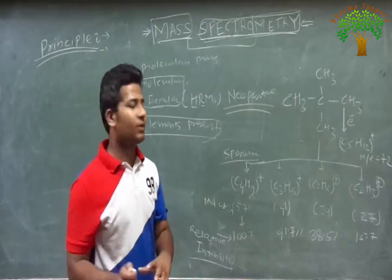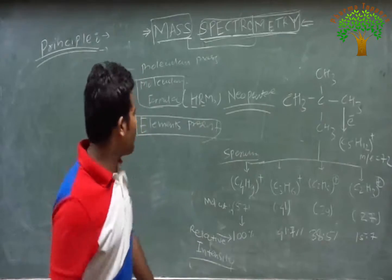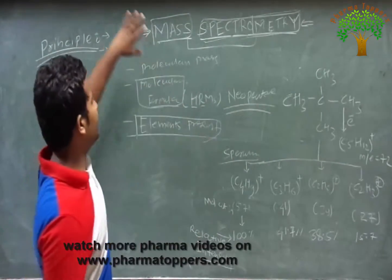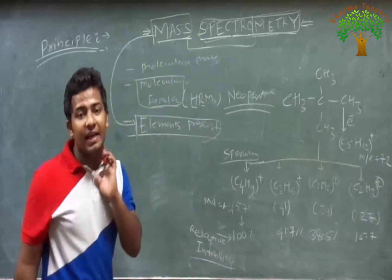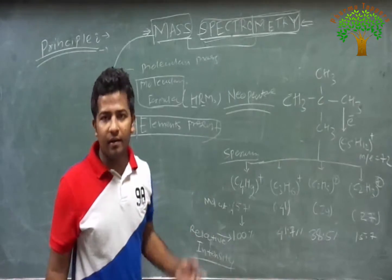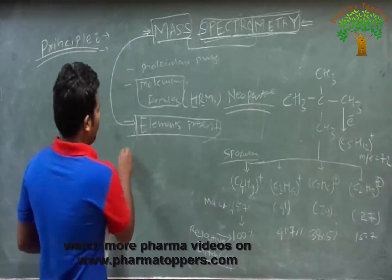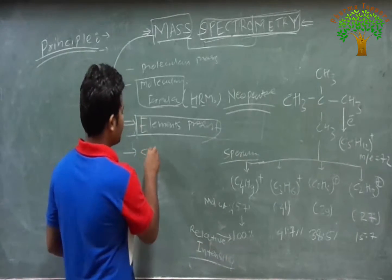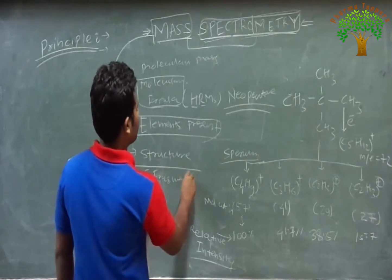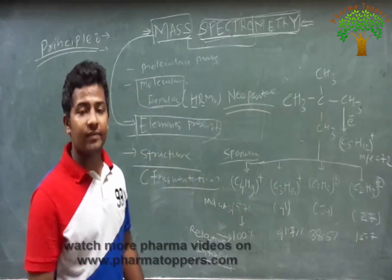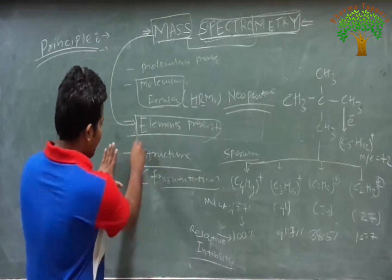For example, NMR spectroscopy is not used for element determination or identification. IR is also not used for identification of elements. Only mass spectrometry is the one spectrometric technique which determines the elements present. Among the four — UV, NMR, IR, and mass — only mass can identify which elements are present. The fourth main application is to identify the structure. By using the fragmentation pattern, we can easily identify the structure of the compound or the fragmented structure of any molecule.